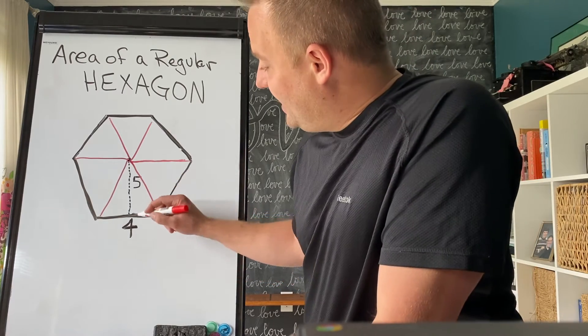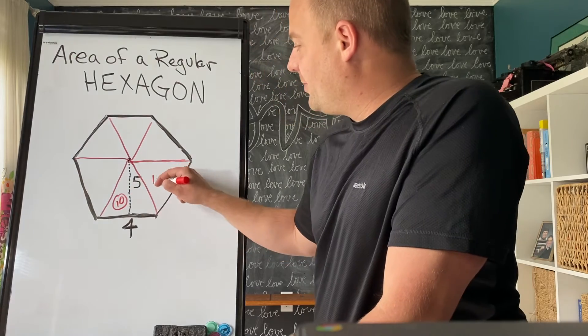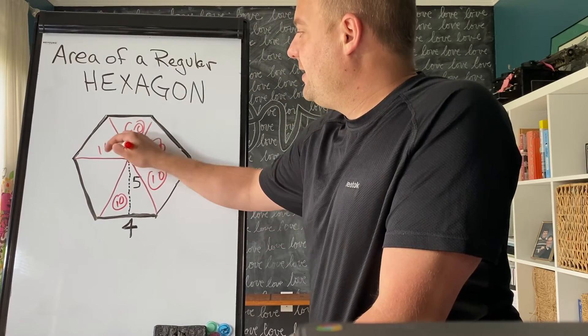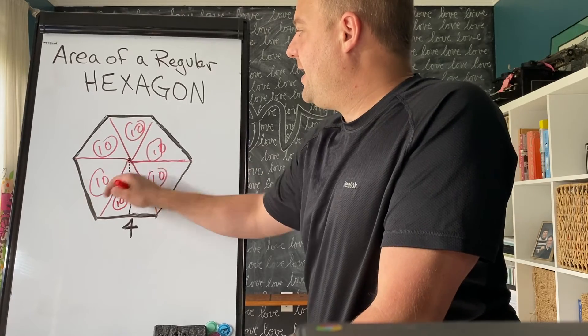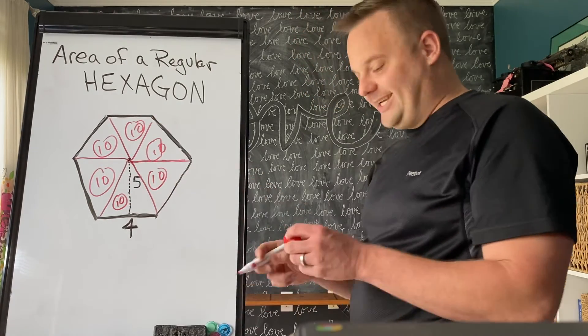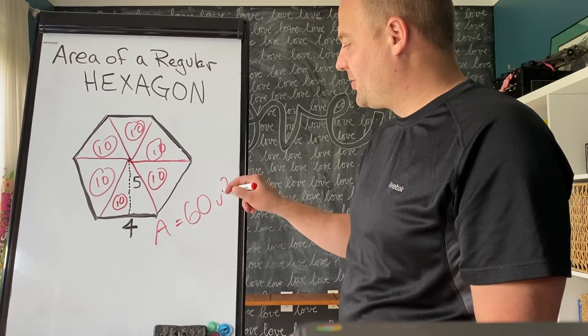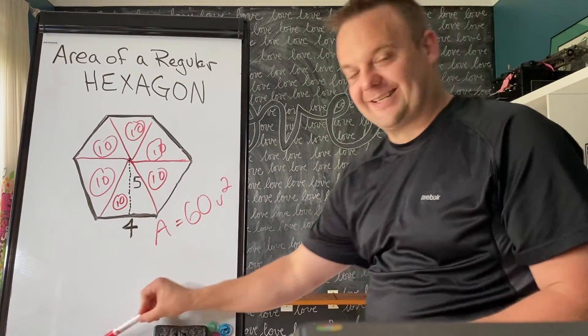So that means this area is 10 units squared. This is 10, 10, 10, 10, 10, and 10. So 10 times 6 is an area of 60 units squared for the area of the hexagon.